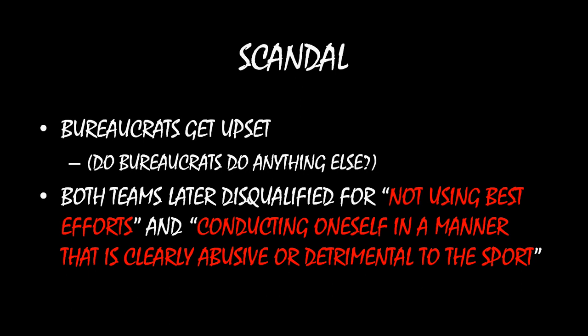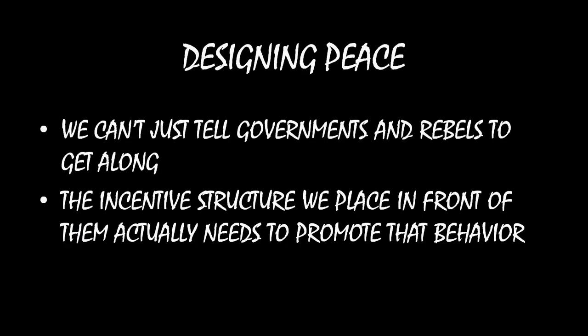All of this is trying to show that we can't just tell governments and rebel groups to get along, like we can't just tell badminton doubles teams to try to play to win. We actually need to put an incentive structure in front of them to convince them to do that. So that's what we're going to be looking at this unit: can we create incentive structures that actually convince governments and rebel groups to reach peaceful settlements rather than go to war? Under what conditions is this possible, or perhaps it is impossible? We'll be able to figure that out using mechanism design. I hope you enjoyed this and hope to see you next time when we dig deeper into this problem. Take care.